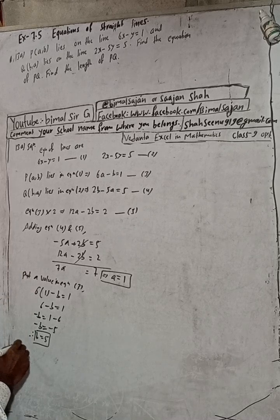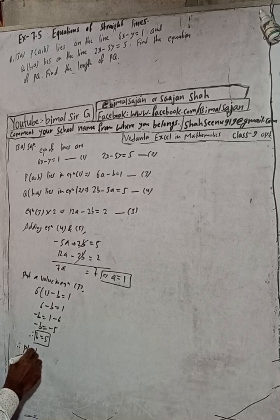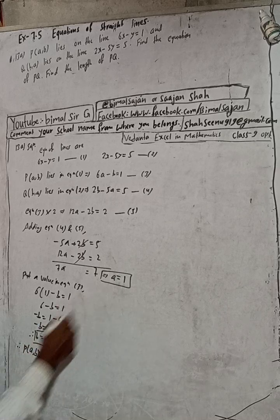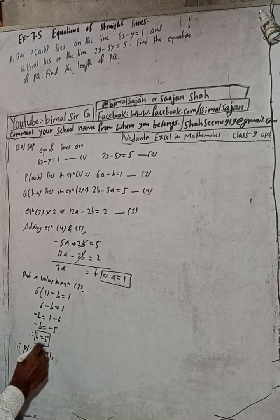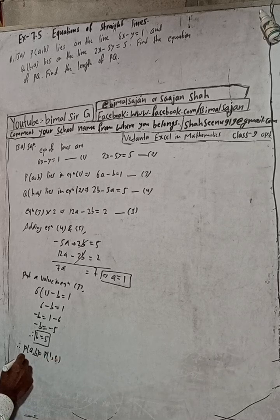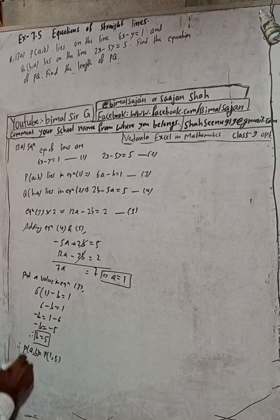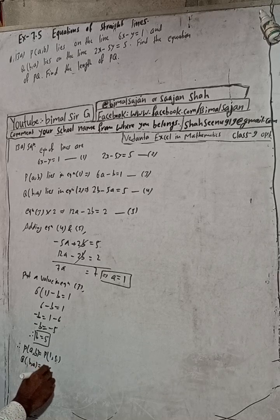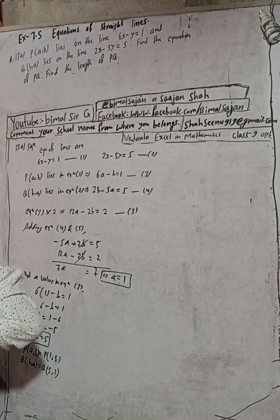Therefore the points are: P(a, b) equals P(1, 5), and Q(b, a) equals Q(5, 1).